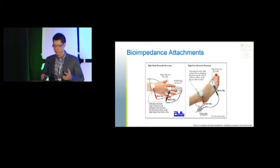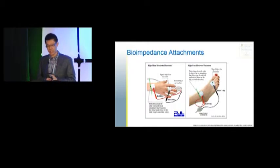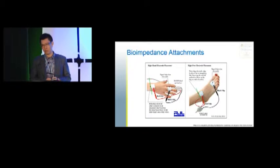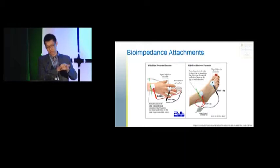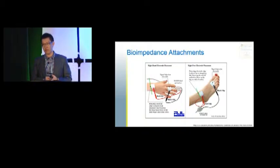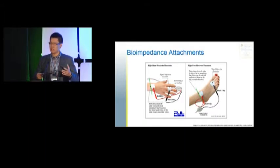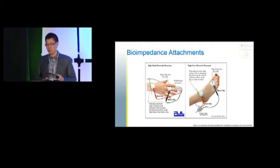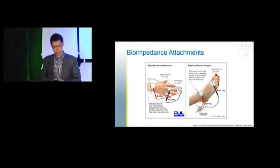How do we attach this to the patient? This diagram is from the RJL manual. It's extremely easy to perform. Two electrodes go to the upper limb and two to the lower limb. In the upper limb, placement is at the middle finger and at the level of the ulnar styloid, typically on the right hand. On the foot, it's at the level of the metatarsal and the medial malleolus. The Fresenius machine has a similar setup. In the RJL machine, the mnemonic is 'red to head.'